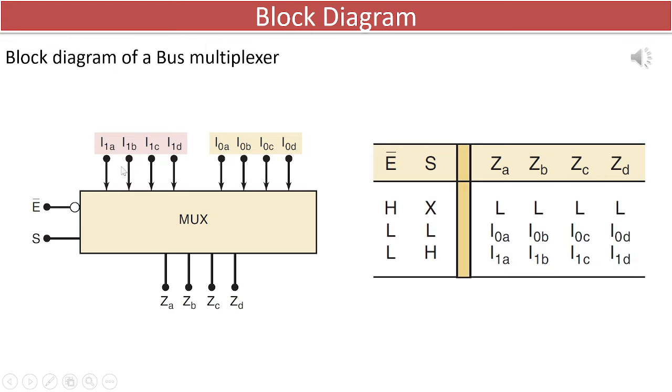One set of inputs are denoted by I1A, I1B, I1C, I1D and another set of input is I0A, I0B, I0C, I0D. The outputs are denoted by ZA, ZB, ZC, and ZD.